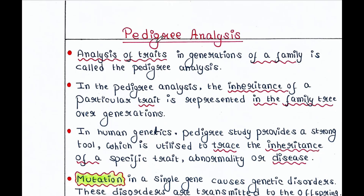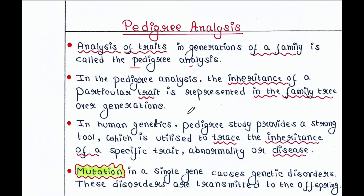Analyzing the traits of a family is called pedigree analysis. In pedigree analysis, the inheritance of a particular trait is represented in the family tree over generations. In human genetics, pedigree study provides a strong tool which is utilized to trace the inheritance of a specific trait, abnormality, or disease.